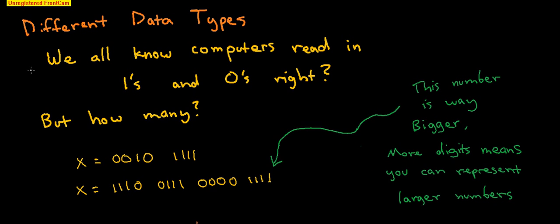Variables have different data types. We all know computers read in 1s and 0s, right? But how many? So for this x, x equals 0,0,1,0,1,1,1,1,1. But say, what if we had x and we said it's equal to this big number? The number with more digits can represent larger numbers.